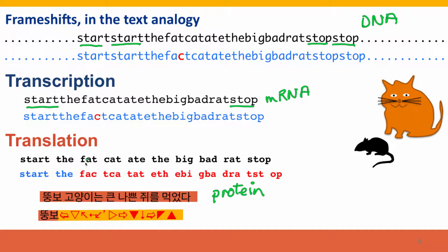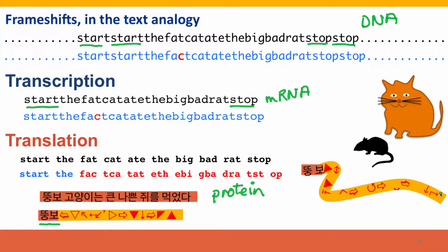Only the sequences before the frameshift are normal. This protein, of course, is not functional, and so the rat runs away — it doesn't get eaten by the cat. It's also frequently shorter than the protein that should have been made, because very often these unselected reading frame triplets include triplets that specify stop codons.